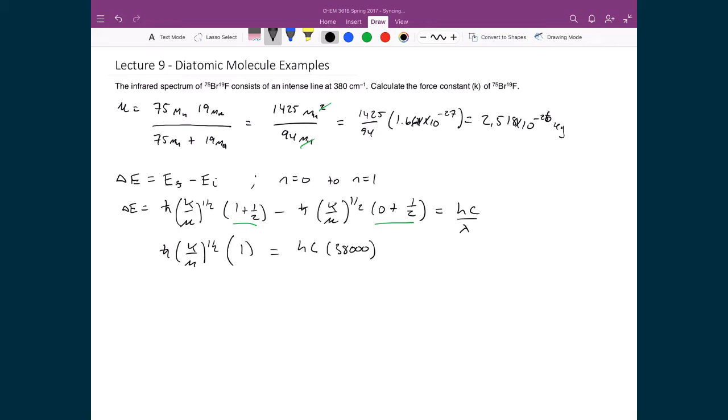I'm going to do one more simplification. I know that h-bar equals h divided by 2π. So I have 1 over 2π times square root of k over mu times 1/2 equals hc times 38,000. Since I've got an h on both sides, I can cross them off. Now I can solve for k.